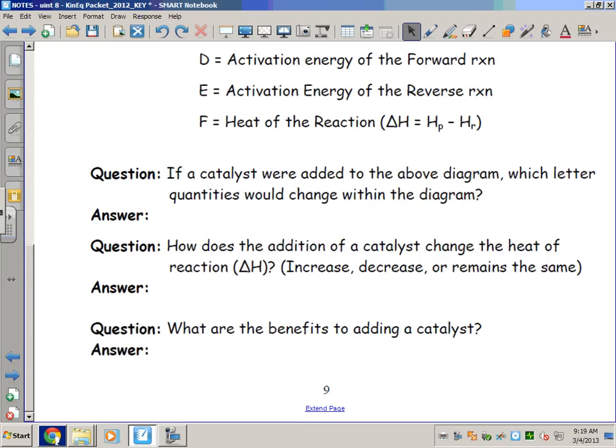Looking at the bottom, quick question and answer. Go ahead and pause these. It's just a question about a catalyst. The addition of a catalyst—what quantities would it change? How would it change the delta H? And what do you think the benefits would be to adding a catalyst? Remember what catalysts do to the rate of reaction, what they do to the energy involved. So use your answers to the first two questions to answer the third. We'll talk about them tomorrow in class.